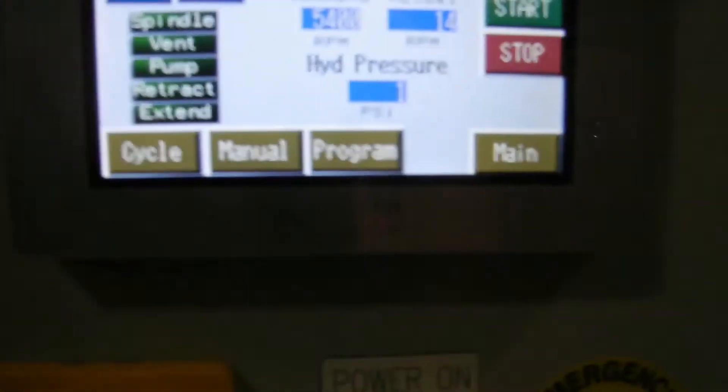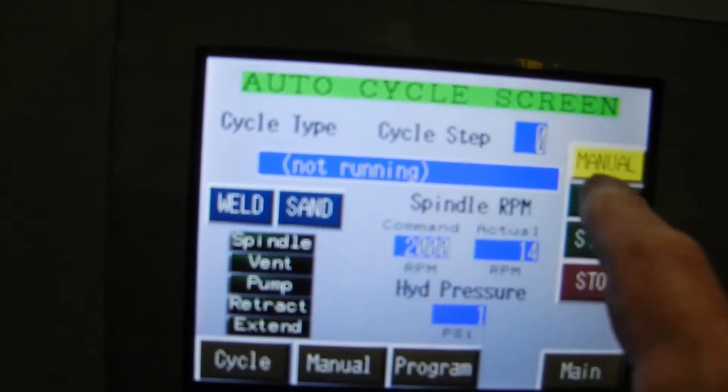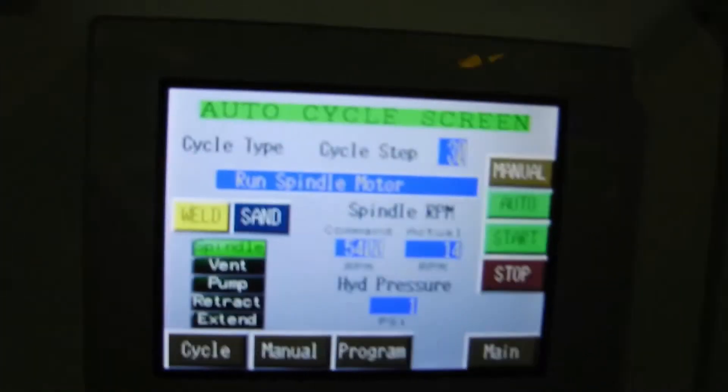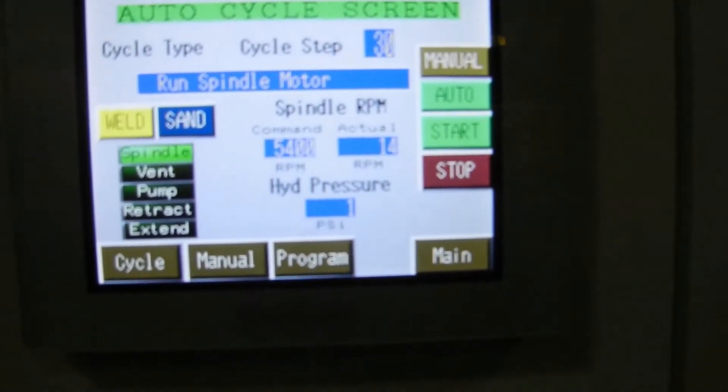When we're doing research and development and we're developing these processes we need to have a lot more variability than what you would want in the field. In the field the system will just have a couple of buttons and one specific weld program that runs every time.